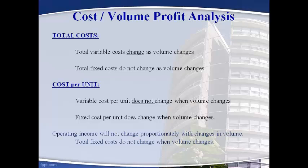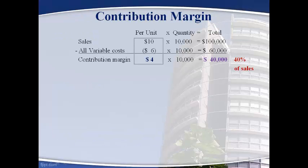Operating profits change at a different rate than sales because fixed costs do not change. Cost-Volume Profit Analysis always begins with the sales price and total variable cost on a per unit basis — the per unit amount will not change as volume changes. All variable costs include product costs of direct materials, direct labor, and variable manufacturing overhead, and all variable period costs. As the quantity changes, the per unit stays the same and the total amount will change.